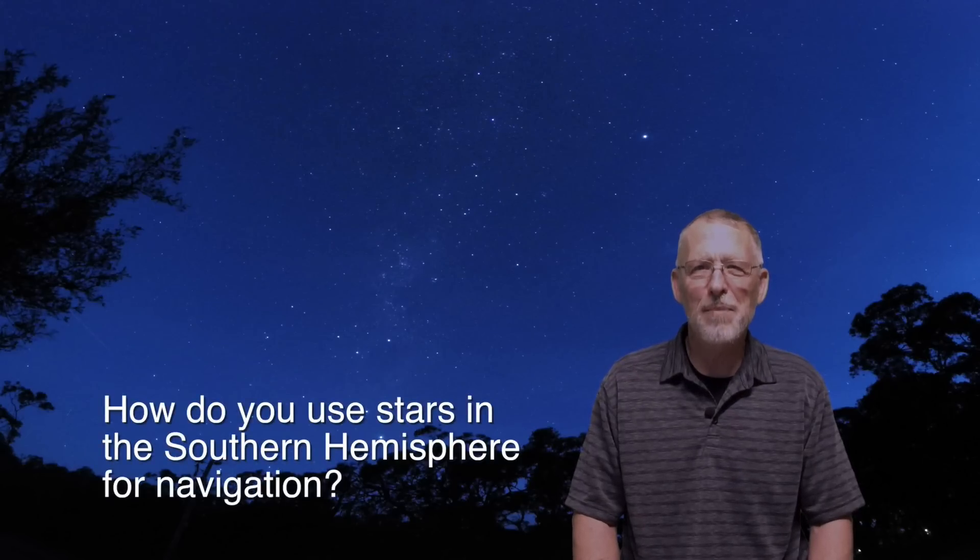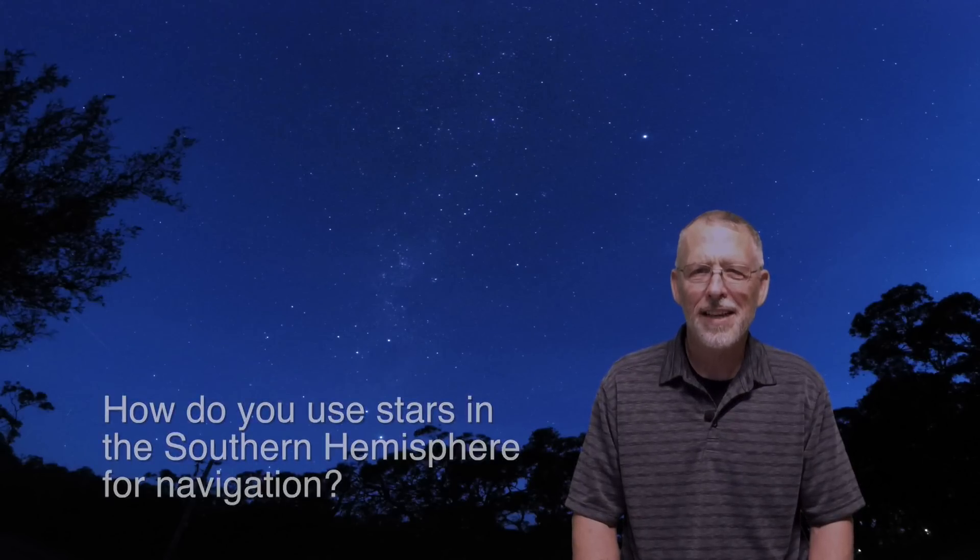The big question is how to use stars in the Southern Hemisphere for navigation. There is no star landmark in the sky like the North Star. Instead, there is a group of stars called the Southern Cross or Crux.